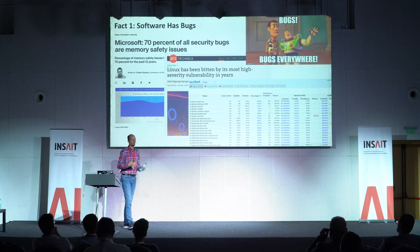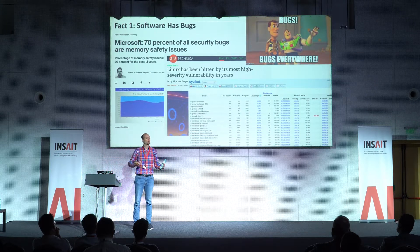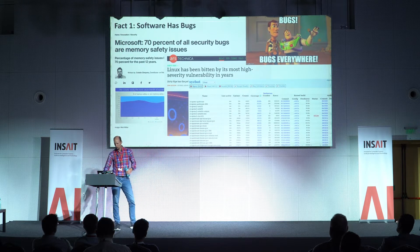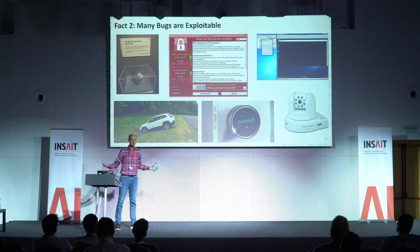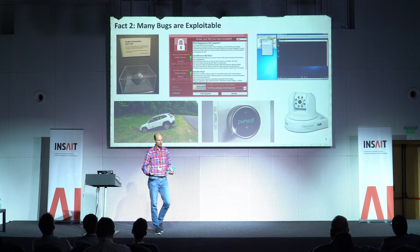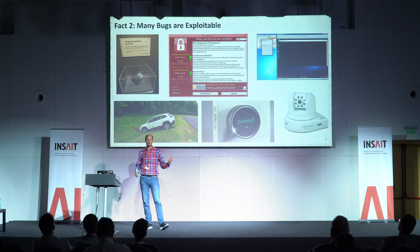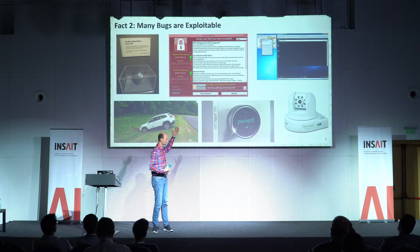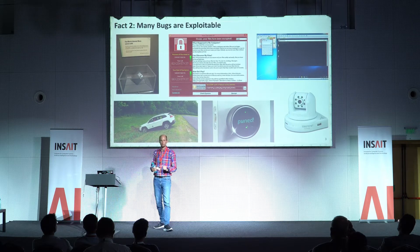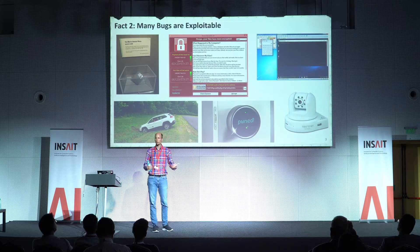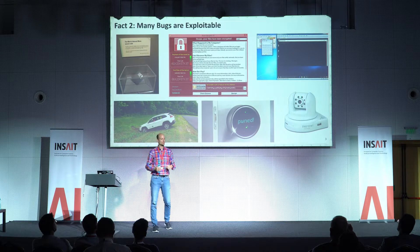What we conclude is that bugs are everywhere. We need to figure out which bugs to focus on, how to focus on them, and how to select different targets. Many of these bugs are actually exploitable, and exploitable can mean many different things. On these systems, if integrity is compromised, this could be used to take over your system, run attacker-controlled code, encrypt your hard drive and ask for a ransom, or take over cloud instances and run arbitrary code or attack other cloud instances.